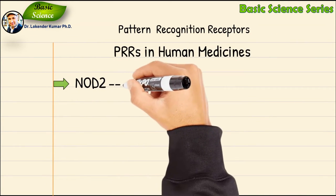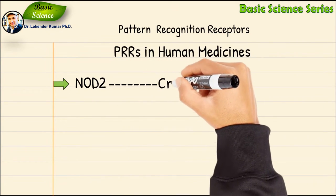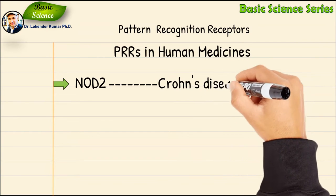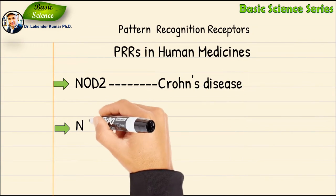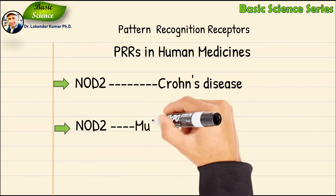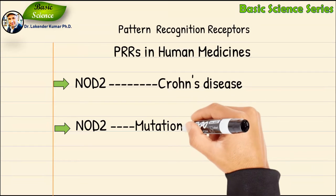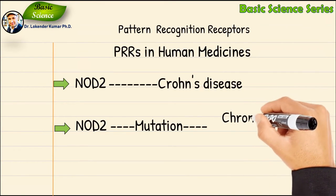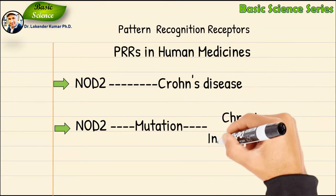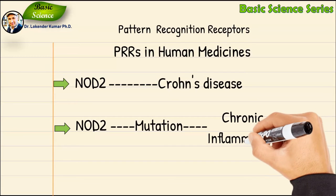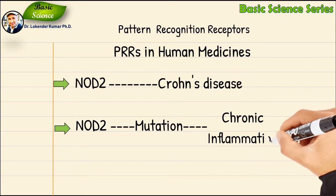In human medicine, NOD2 has been associated, through loss and gain of function mutations, with the development of Crohn's disease. Mutations in NOD2, in combination with environmental factors, lead to the development of chronic inflammation in the intestine.